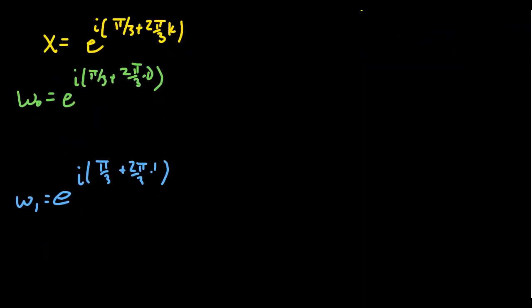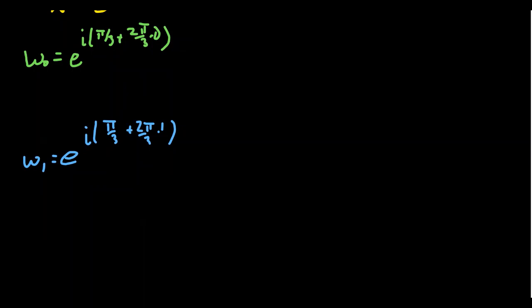And then the last one, we'll do that one in red. We'll call it w₂. That's equal to e^(i(π/3 + 2π/3·2)), like so. And so then we just need to simplify these numbers here.